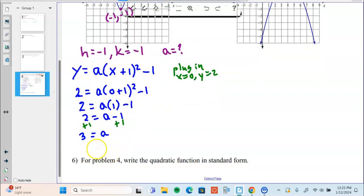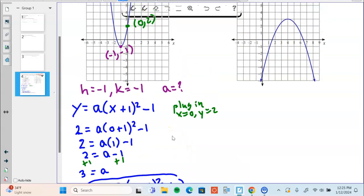So my final answer: y equals three times x plus one squared subtract one. There's our final answer, there's the equation of our quadratic. We're going to do one more.